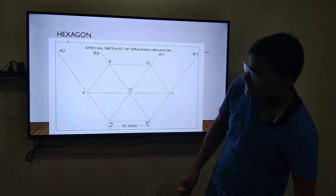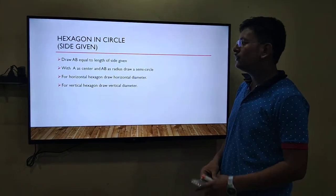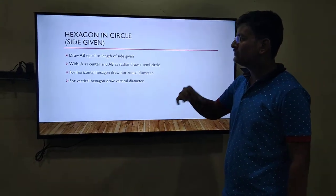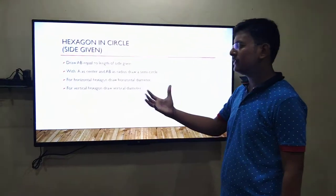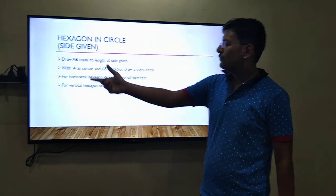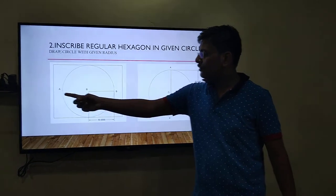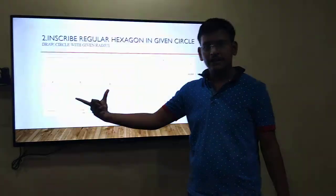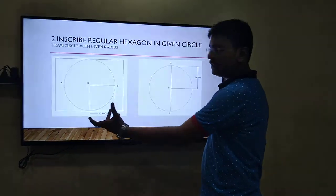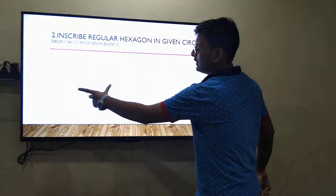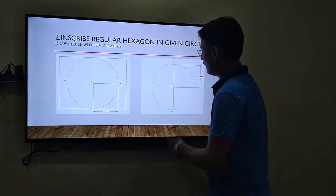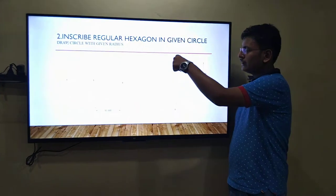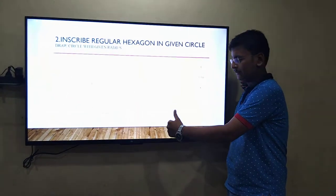Now, we will discuss next method. If we want to inscribe our hexagon in a given circle. So, draw a circle of given end. For horizontal hexagon, keep it like this. And for vertical, give the vertical diameter.